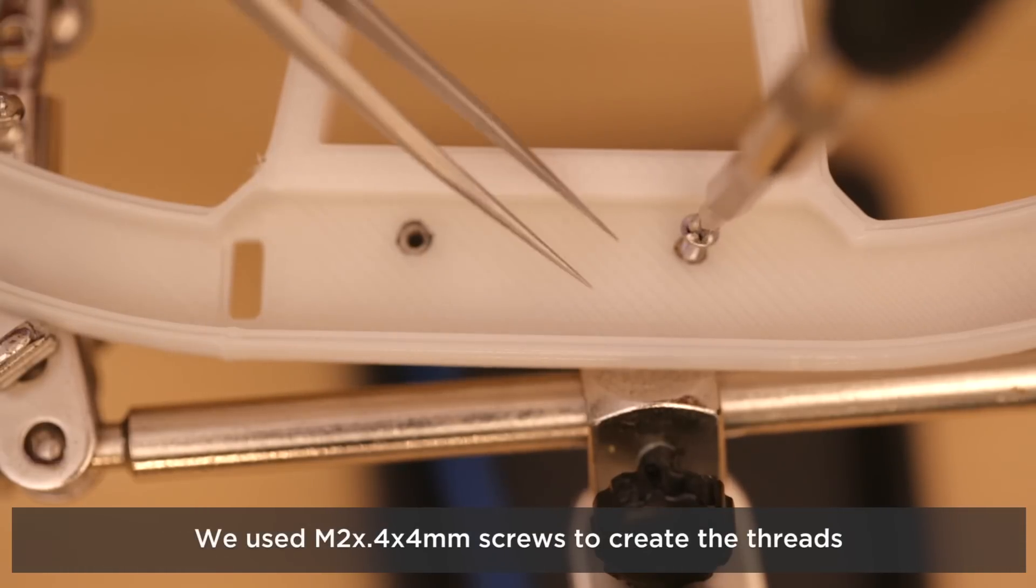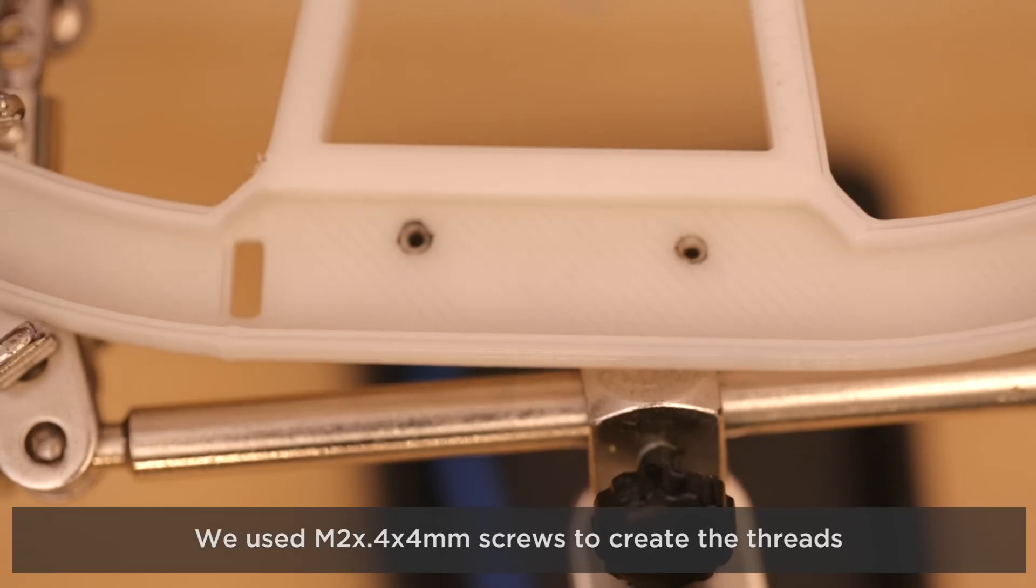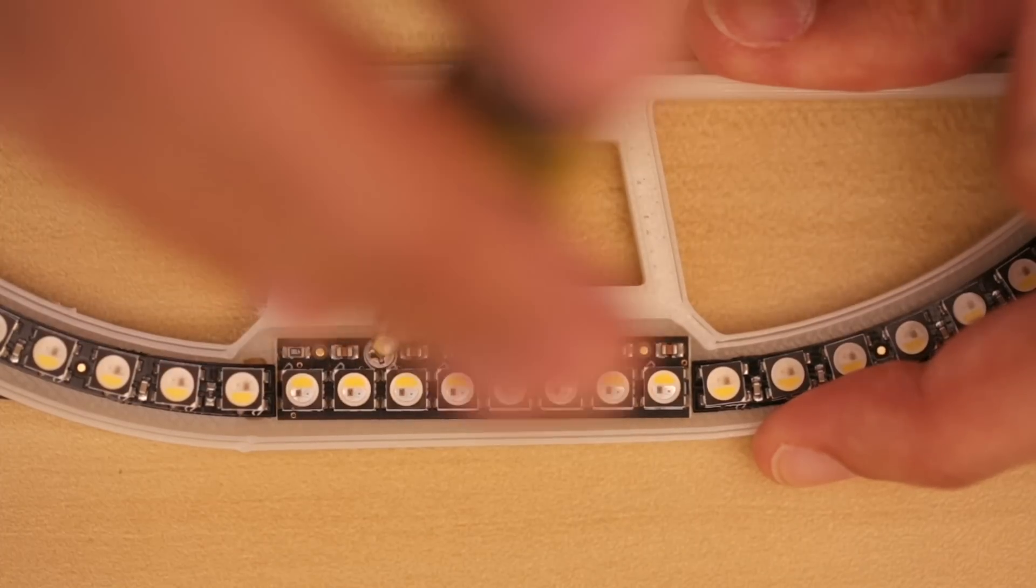Then we can insert and fasten M2 sized screws to create threads. Now we can secure the PCB to the housing with machine screws.